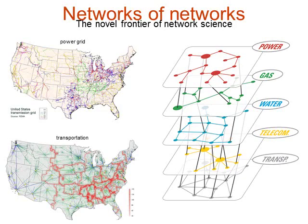For example, the power grid depends on the gas supply, on water distribution, on how communications are controlled, and on transportation. In reality, you cannot consider each network as an isolated system. To understand better how they work, you have to consider that they interact with other networks.